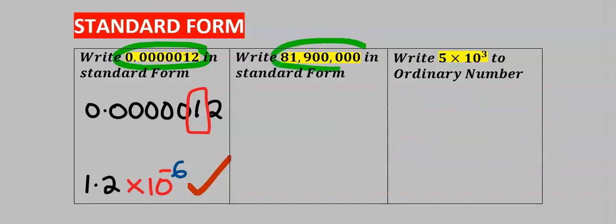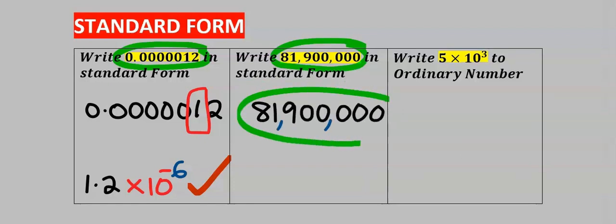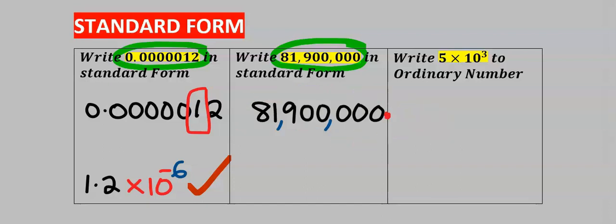Next, consider this number and we're going to write this in standard form. This is a very large number and the decimal is at the back — we can include a trailing zero here without affecting this large number. Step number one: target the first significant number — here it is eight.